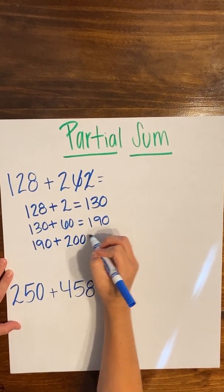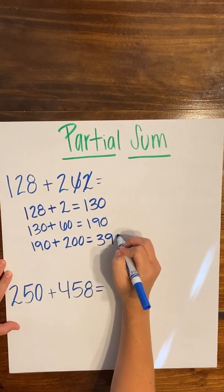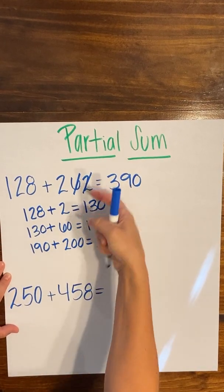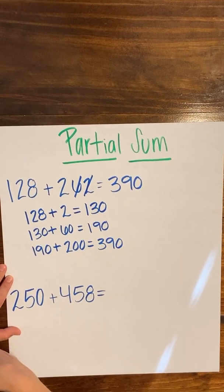So 200 and I know that 100 plus 200 will give me 390. So my sum for this problem is going to be 390. And I took the second addend and broke it into parts that were easier for me to solve in friendly numbers.